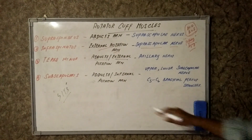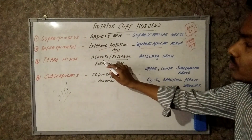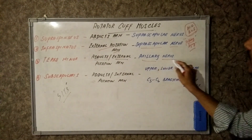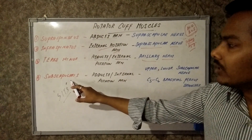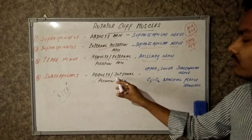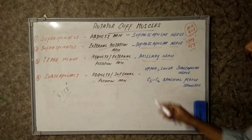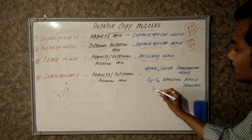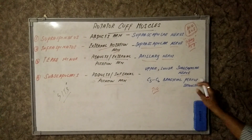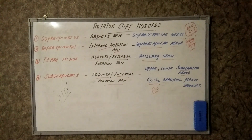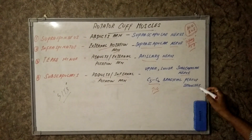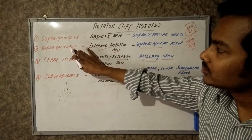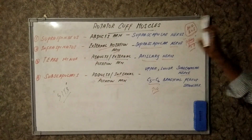Teres minor is used to externally rotate the arm and is supplied by the axillary nerve. The final muscle is subscapularis, which is used to internally rotate the arm and is supplied by the upper and lower subscapular nerve, and some branches from the posterior cord of the brachial plexus from the C5-C6 segment.